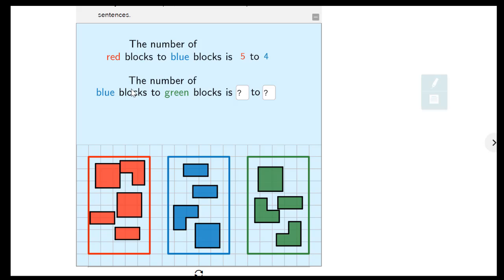And it says, the number of blue blocks to green blocks is. So now I'm comparing this many blocks to this many blocks. And blue, we already counted those, we know is four. And green, one, two, three, four, also is four.